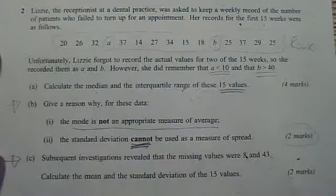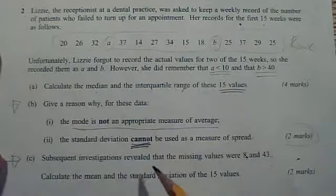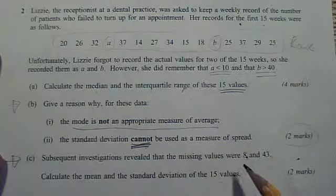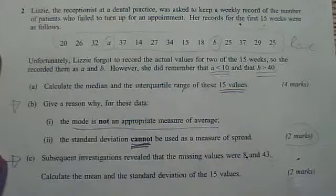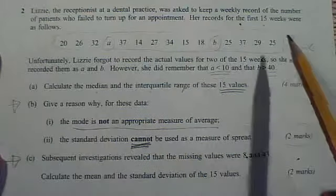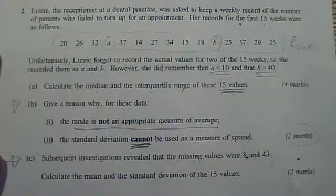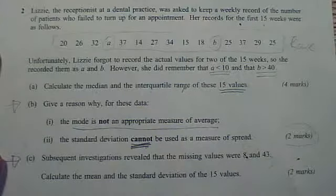Part C. Subsequent investigations revealed that the missing values were 8 and 43, so now it's telling you the values of your A and your B, and all you need to do is calculate the mean and standard deviation of that list, which you'll do by putting them very carefully into your calculator.